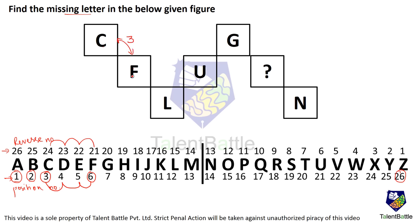If you check out F and L, the difference in letters is 6 — going from position 6 to position 12. So you can see the difference is increasing by 3: C to F is 3, F to L is 6.